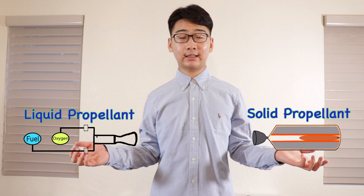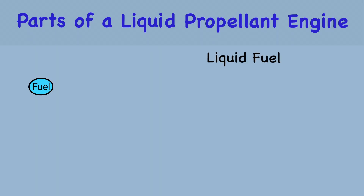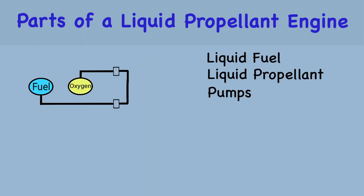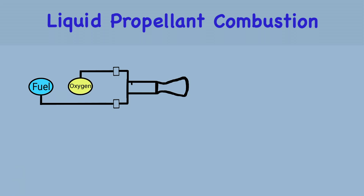There are two main categories of chemical fuel rockets: liquid propellant and solid propellant. These are the parts of a liquid propellant engine. To create combustion, liquid fuel and liquid oxidizer are pumped by turbines.